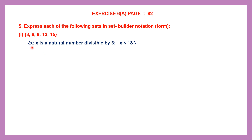So, x is such that — you must always start a set builder notation like this — x is such that x is a natural number. x stands for every element inside. In the set builder form, we don't give the actual element, but we are telling indirectly what the element is. So we are saying x is a natural number divisible by 3. Natural numbers start from 1. We are also saying that x should be less than 18. That means 18 is the multiple after 15. So we read this as: x is such that x is a natural number divisible by 3 and x is less than 18.